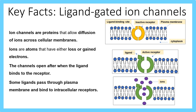Let's progress to ligand-gated ion channels. Ion channels are proteins that allow the movement of ions for transport, and this is achieved by a process called diffusion — the movement of particles from an area of high concentration to an area of low concentration down a concentration gradient.